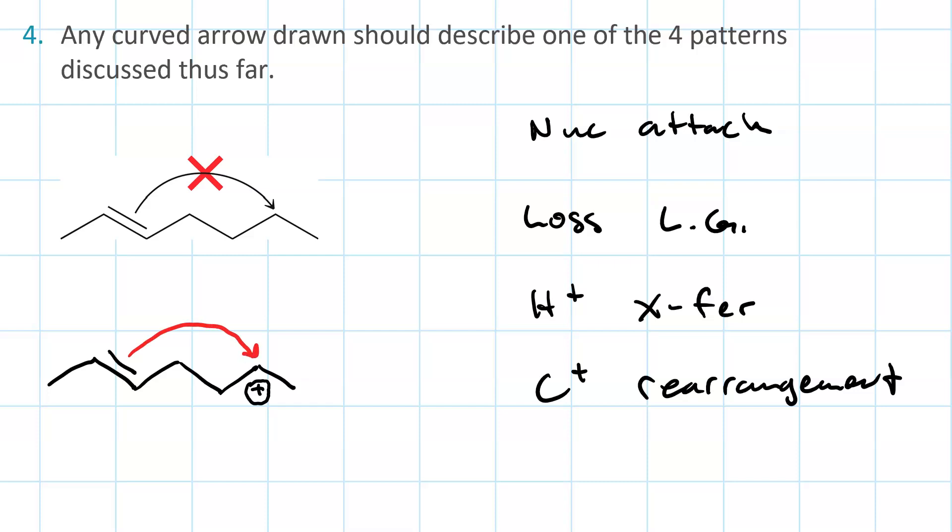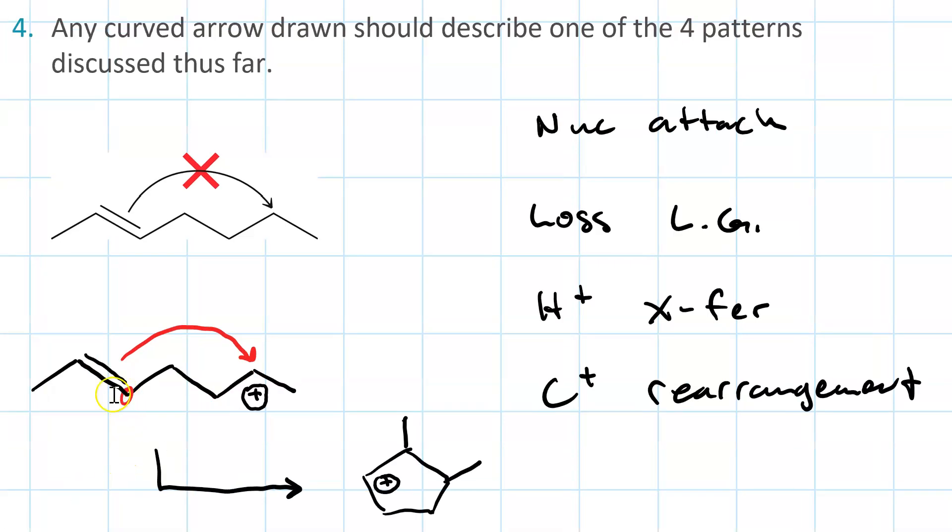And that would give us a ring with one, two, three, four, five carbons. This carbon here that's still circled in red is the one that would end up a carbocation.